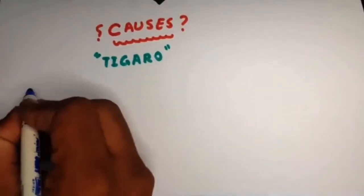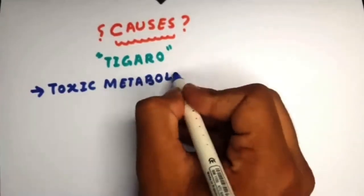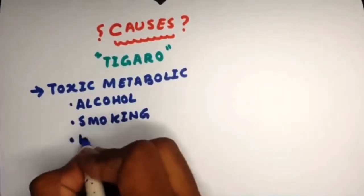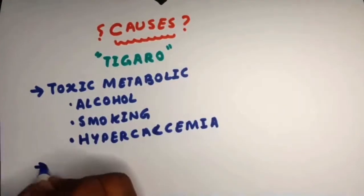As for the causes of chronic pancreatitis, a good mnemonic to remember is TIGERO. This includes toxic metabolic causes like alcohol abuse, smoking, or hypercalcemia.